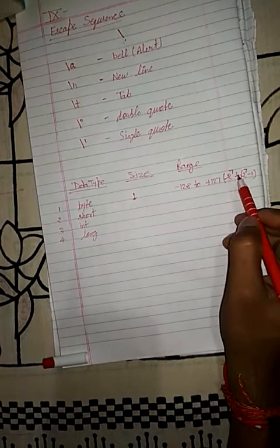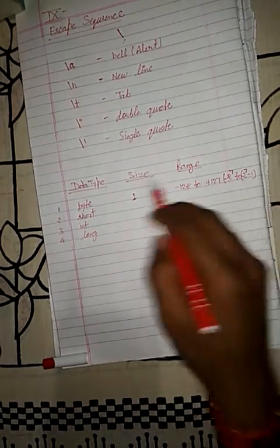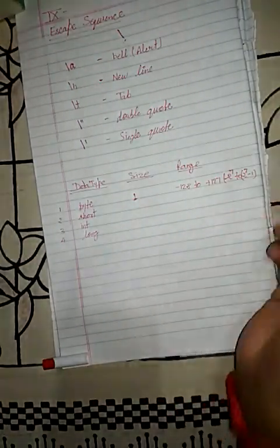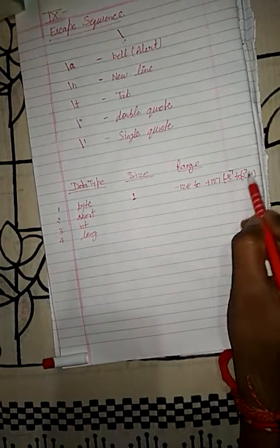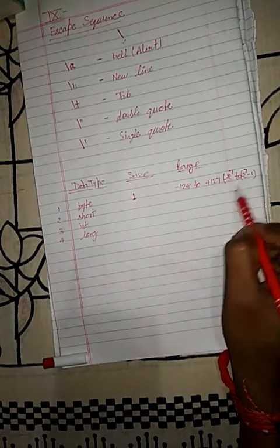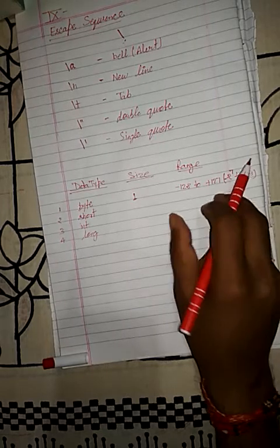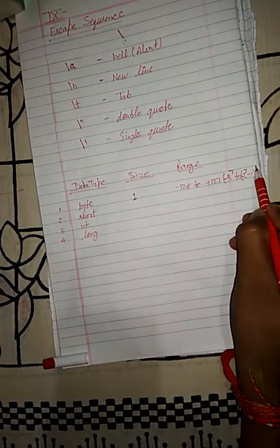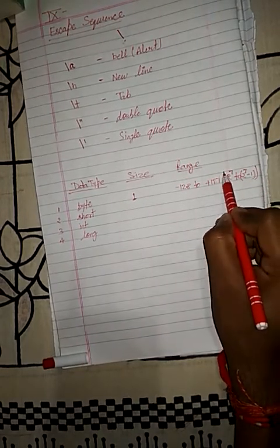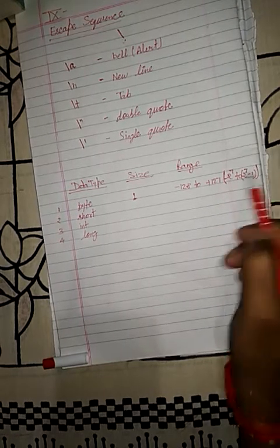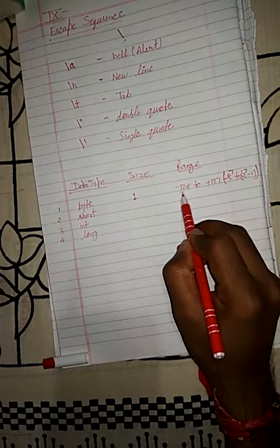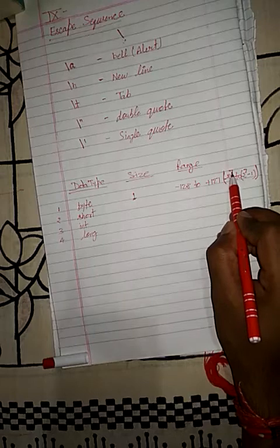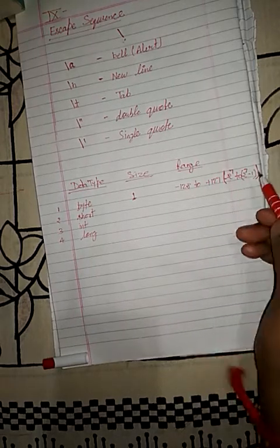The reason I am explaining the power-of-2 form is that when we move to the next data types, the ranges become very, very large, so we need this notation. The byte range can be written as: minus 2 to the power 7 to 2 to the power 7 minus 1.